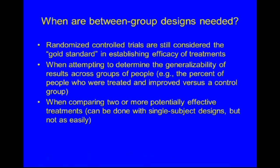Randomized control trials are still considered the gold standard in establishing the efficacy of treatments. Between-group designs are also helpful when attempting to determine the generalizability of results across groups of people — for example, the percent of people who improved in a treated versus a control group — and when comparing two or more potentially effective treatments, though this can be done with single-subject designs, just not as easily.